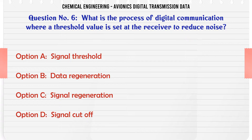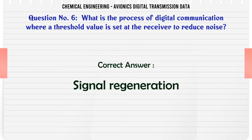What is the process of digital communication where a threshold value is set at the receiver to reduce noise? A: Signal threshold. B: Data regeneration. C: Signal regeneration. D: Signal cutoff. The correct answer is Signal regeneration.